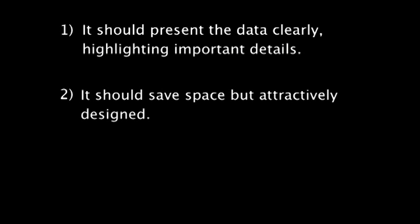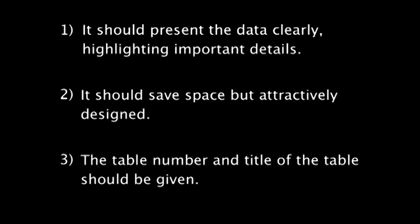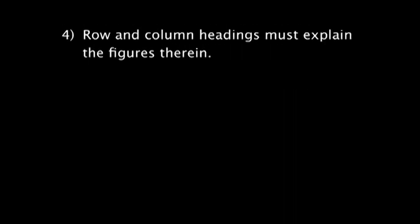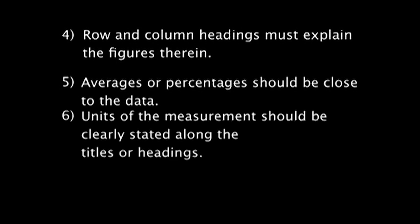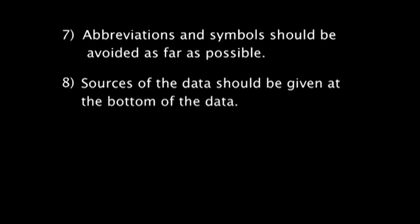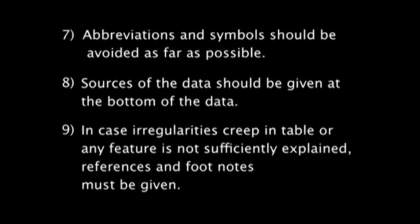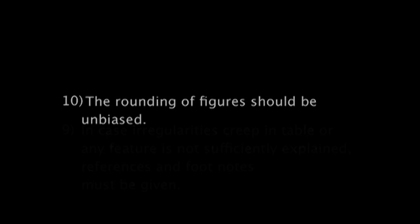Higher-order tables provide information about a large number of interrelated questions and may be four-way, five-way, six-way, etc. Such tables are called manifold tables. A good table should: present data clearly, highlighting important details; save space but be attractively designed; include a table number and title; have row and column headings that explain the figures; show averages or percentages close to the data; clearly state units of measurement; avoid abbreviations and symbols where possible; cite sources of data at the bottom; include references and footnotes for irregularities; and ensure rounding of figures is unbiased.